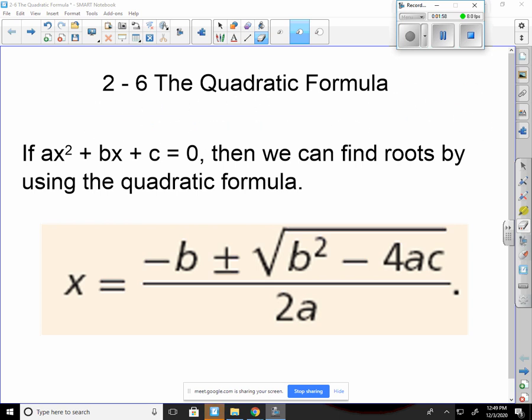Now, the quadratic formula is kind of hard to remember, but that quadratic formula is x equals negative b plus or minus the square root of b squared minus 4ac all over 2a.